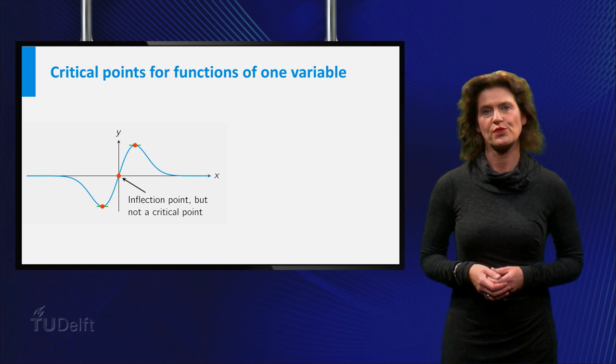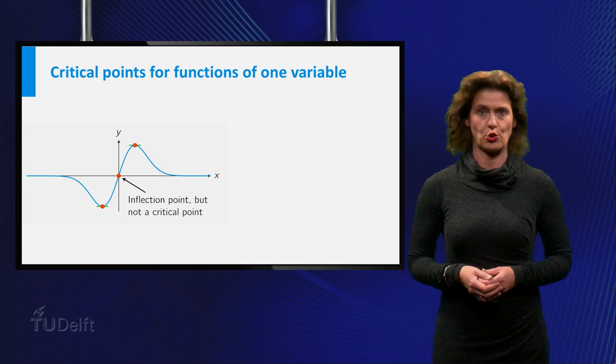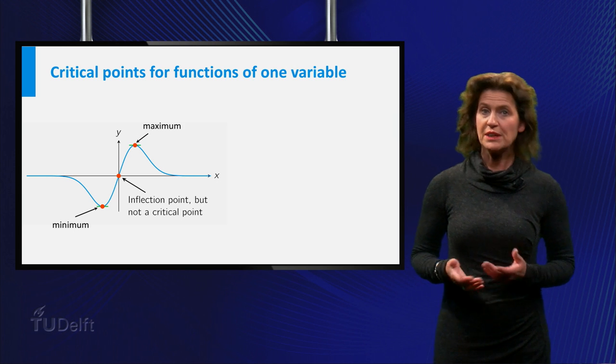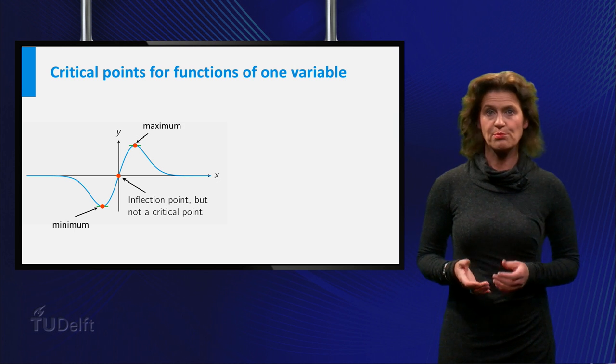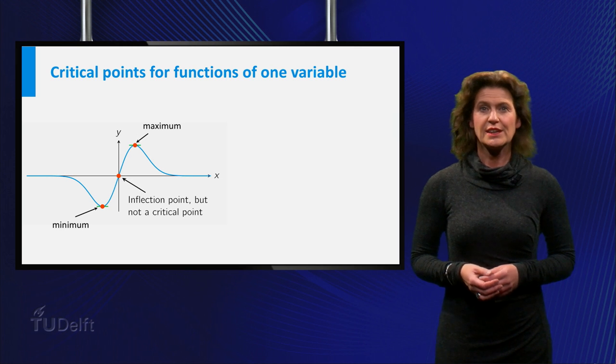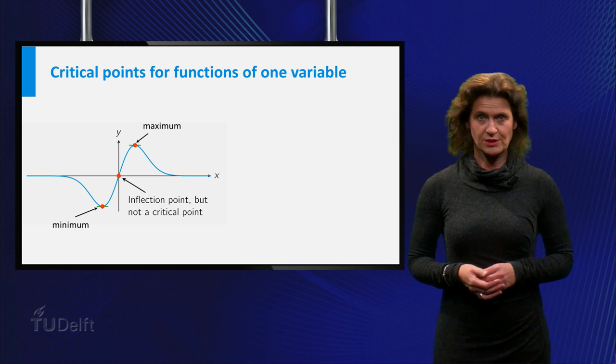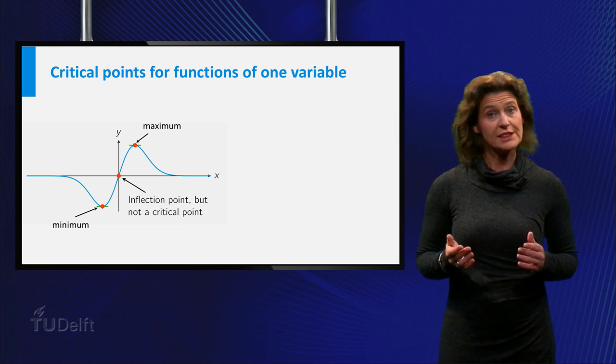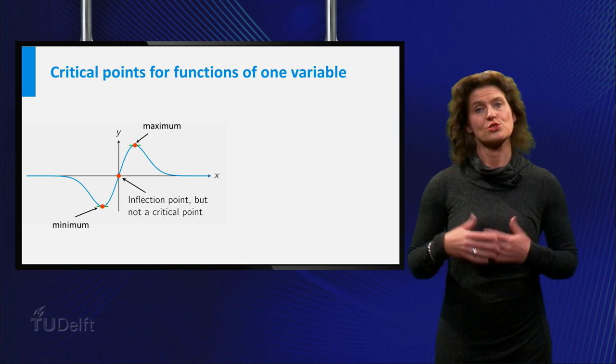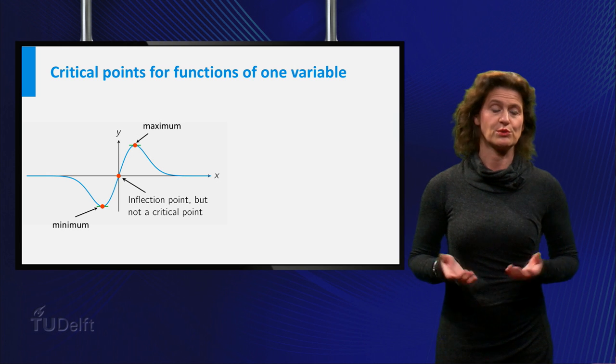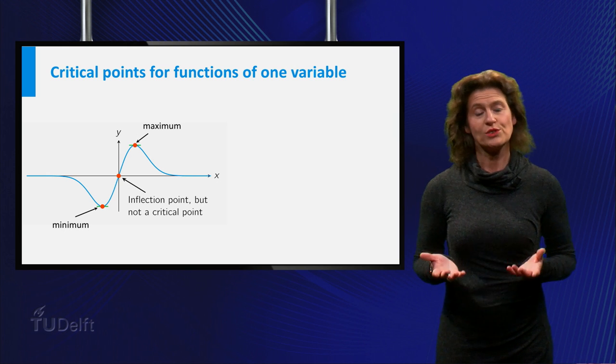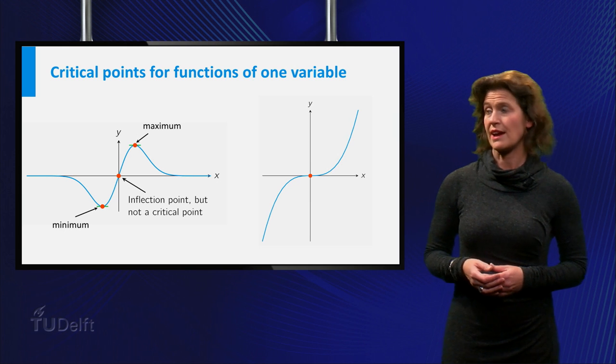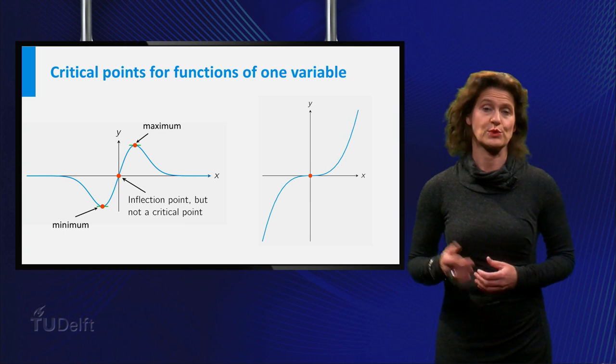Here some special points for a function of one variable are shown. In this graph you see a maximum, a minimum and an inflection point in the origin. If you look at the graph in the origin you see that the slope of the tangent line at the origin is not equal to zero. So the derivative at that point is not equal to zero, so the origin is not a critical point. In the next graph the origin is a critical point.